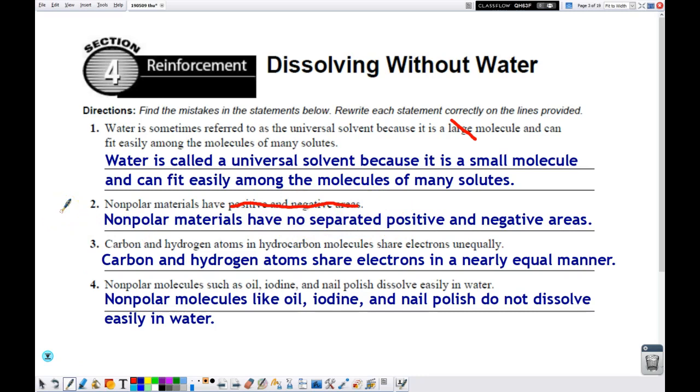Number three. Carbon and hydrogen atoms in hydrocarbon molecules share electrons unequally. And that un is incorrect. Actually, carbon and hydrogen atoms share electrons in a nearly equal manner. That is the correct way to say that.